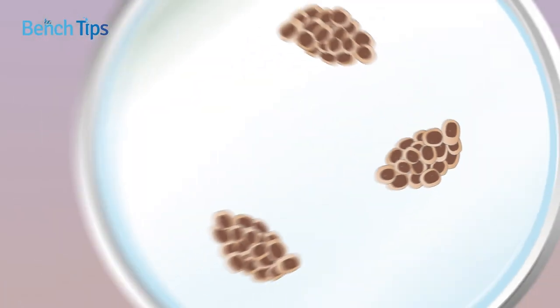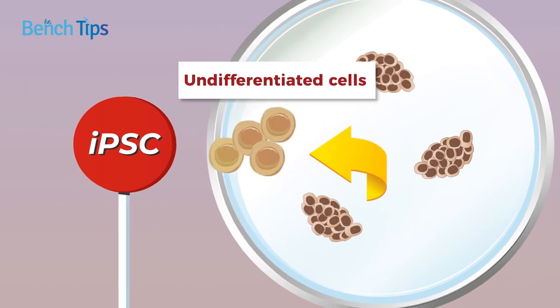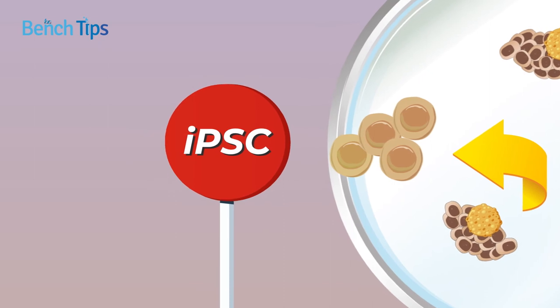Yet another challenging application is the removal of rare, undifferentiated cells from induced pluripotent stem cell cultures prior to transplantation. This is essential to prevent tumors from developing, yet undifferentiated cells can often slip through the net using established cell sorting techniques.